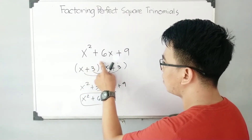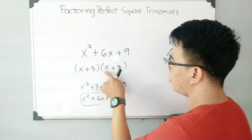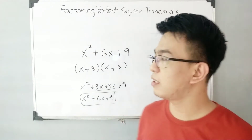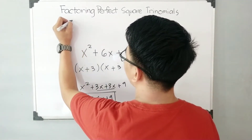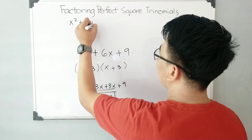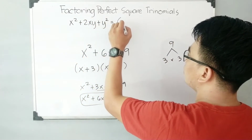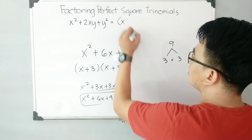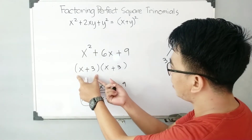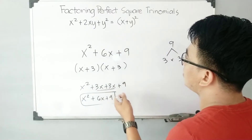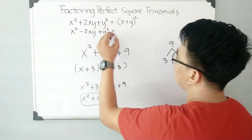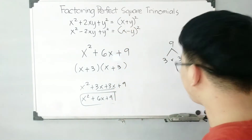That's why these are the factors of the given trinomial. To make the process easier, we can use this pattern: x squared plus 2xy plus y squared is equal to x plus y raised to the second power. For the second pattern, we have x squared minus 2xy plus y squared, and the factors are x minus y raised to the second power.